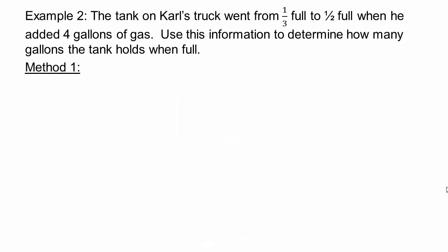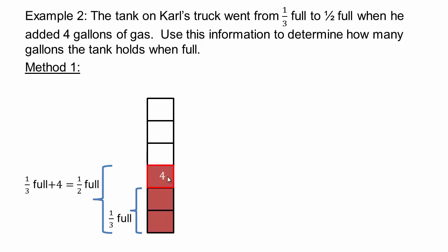Let's take another example. The tank on Carl's truck went from a third full to half full when he added four gallons of gas. Use the information to determine how many gallons the tank holds when full. So let's draw the truck. We have a third and half represented in the same tank, so that's why we have six pieces in the tank. A third will be two of them, so this is a third full. Now, when you added four more gallons, it became half full, so half full would be this much more then. So that represents four gallons, and so our full gallon, so our full tank would be four times six, or 24 gallons. So that's our visual solution.